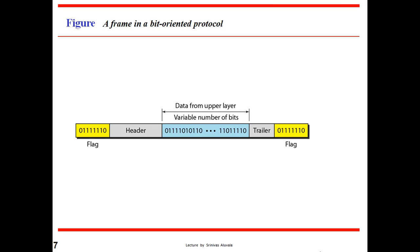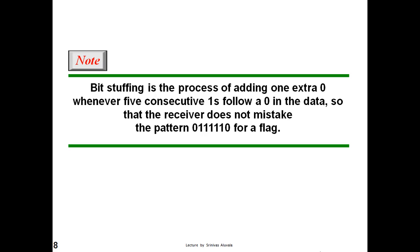In a bit-oriented protocol, data from the upper layer is taken — a variable number of bits — and a header and trailer are added by the data link layer, with a flag added at both ends of the frame. The flag here is 01111110. If the flag appears as part of the data, there is a question of how to distinguish it from the start or end of the frame. Bit stuffing is the process of adding one extra 0 whenever five consecutive 1s follow a 0 in the data, so that the receiver does not mistake the pattern 01111110 for a flag.